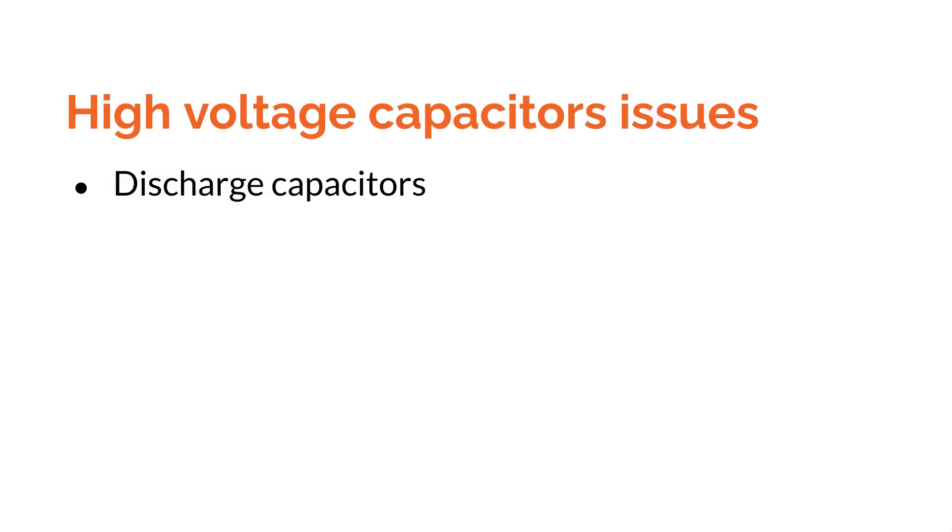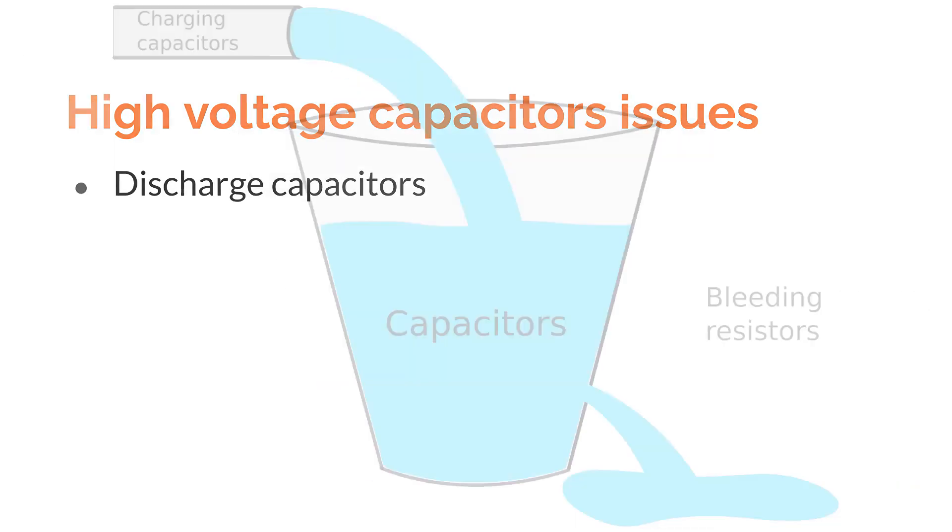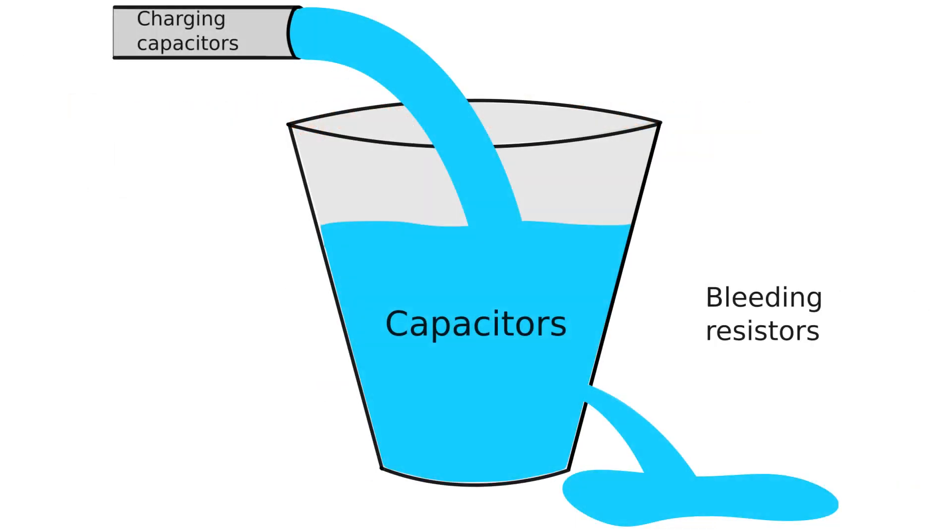Having this much capacitance at a high voltage introduces two new issues. First, I need to discharge the capacitors somehow. I don't want them to hold their charge for a long time after the VFD has been turned off. That's how you accidentally get electrocuted. I want the charge to slowly drain within a few minutes. I can't let it drain too quickly, however, otherwise it'll be much harder to charge the capacitors when I am using them.